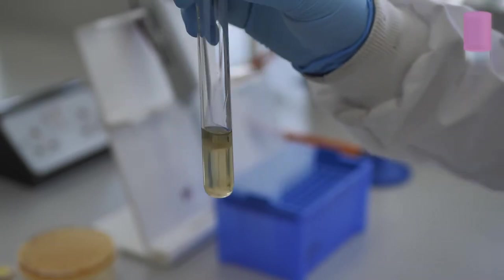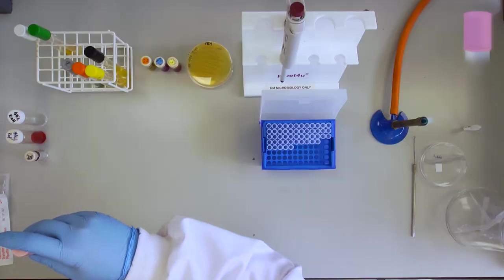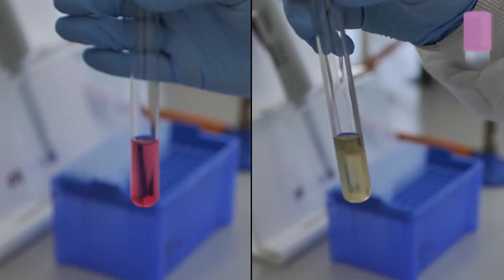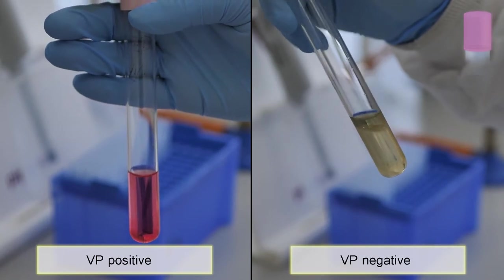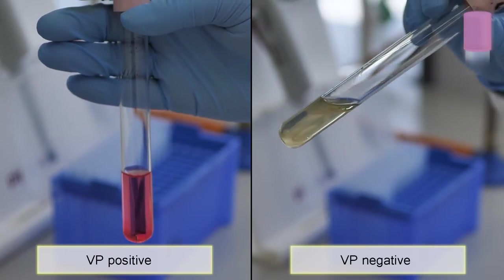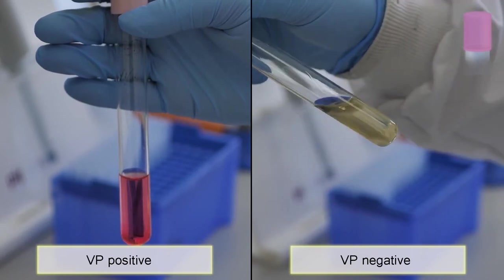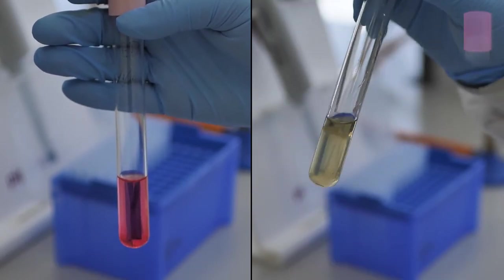Examine after 15 minutes and 1 hour. A colour change from yellow to a cherry red colour indicates a positive Voges-Proskauer result. No colour change indicates a negative Voges-Proskauer result.